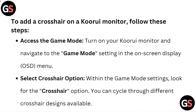To add a crosshair on a Kori monitor, follow these steps. First, access the game mode. Turn on your Kori monitor and navigate to the game mode setting in the on-screen display (OSD) menu.